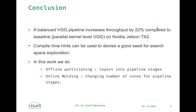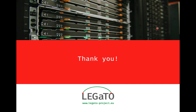In conclusion, a balanced VGG pipeline increases throughput by 22% compared to the baseline on NVIDIA Jetson TX2. The compile time hints can be used to devise a good seed for such space exploration. In this work, we demonstrate offline partitioning — distributing CNN layers into pipeline stages — and online molding — changing the number of cores for pipeline stages. I would be happy to answer your questions and get your suggestions. Talk to you in the chat window. Bye!